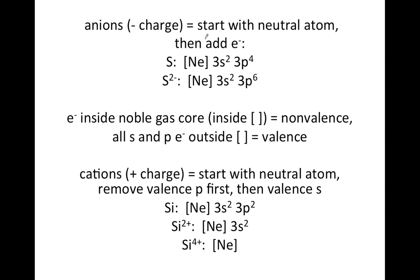What you're going to want to do is start by writing the neutral configuration for the atom, and then if it's got a negative charge, you're going to add electrons. For the example sulfur S, you start with [Ne] 3s² 3p⁴.